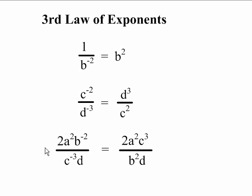In the last example, we have a more complex expression. And the difference here is that some of the terms do not have a negative exponent. The 2, the a squared and the d do not have negative exponents, so they do not move. They stay in the same places in the answer. But the b to the negative 2 moves down to the bottom and becomes b squared, and the c to the negative 3 moves up into the numerator and becomes c cubed.